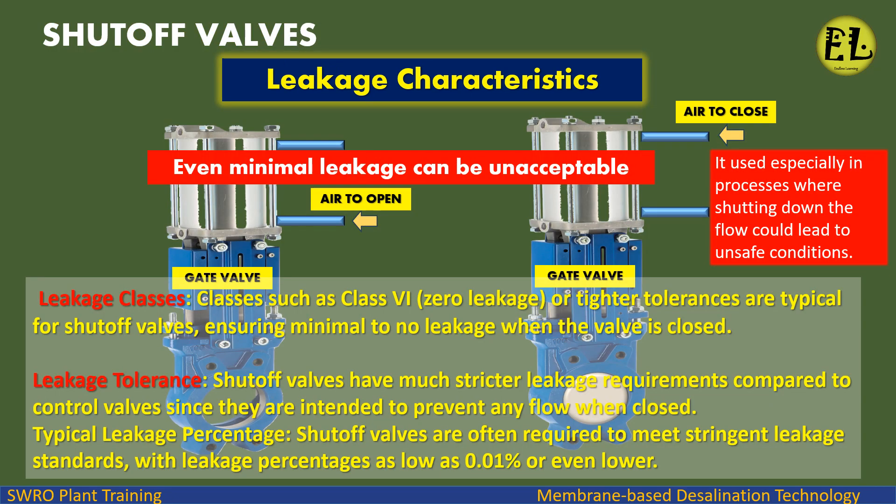For shutoff valves, leakage classes such as Class 6 or zero-leakage tolerances are typical, ensuring minimal to no leakage when the valve is closed. Shutoff valves have much stricter leakage requirements compared to control valves, since they are intended to prevent any flow when closed. They are often required to meet stringent leakage standards, with leakage percentages as low as 0.01% or even lower.